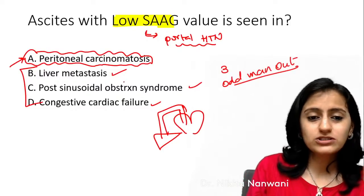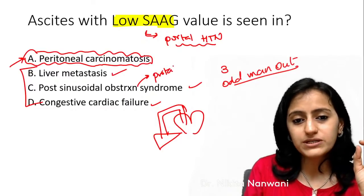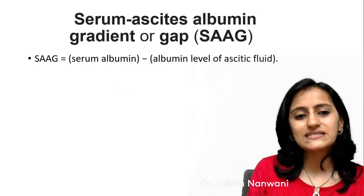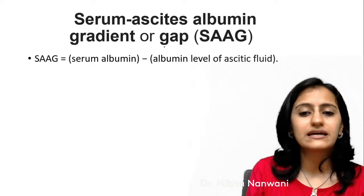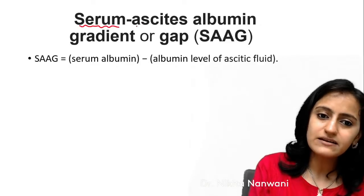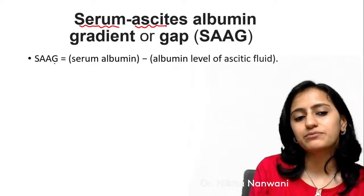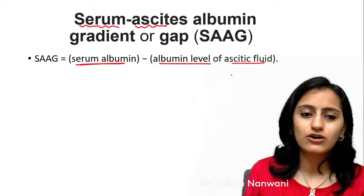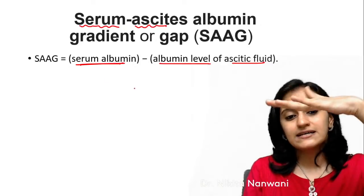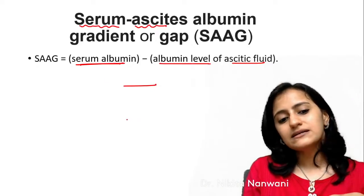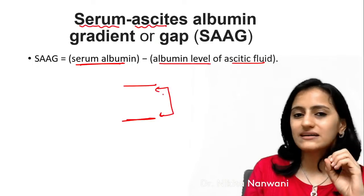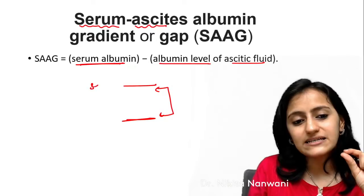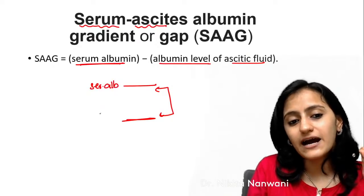Post-sinusoidal obstruction syndrome is a cause of portal hypertension. Now let's understand what Serum Ascites Albumin Gradient or gap means. As the term says, SAAG is serum albumin minus the albumin level of the ascitic fluid. So SAAG equals serum albumin minus ascitic albumin — that is the gradient.